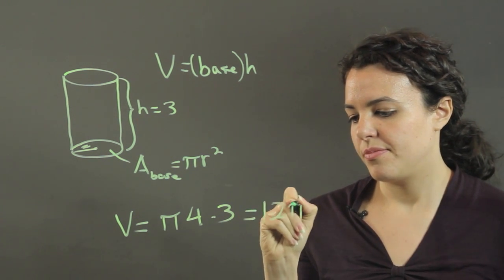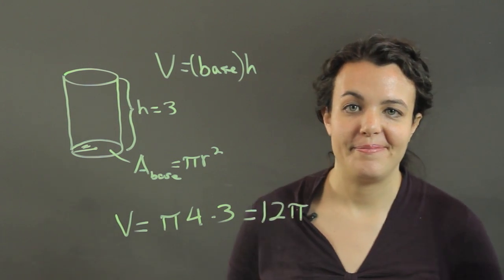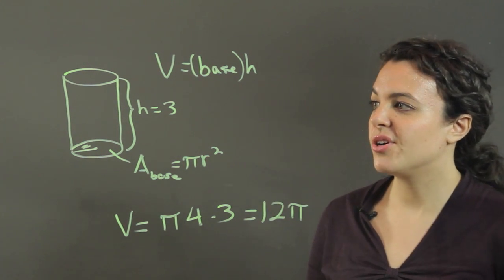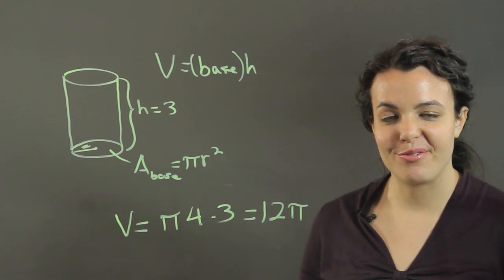So our volume is 12 pi. That's how you find the volume of a closed cylinder. Thank you for watching.